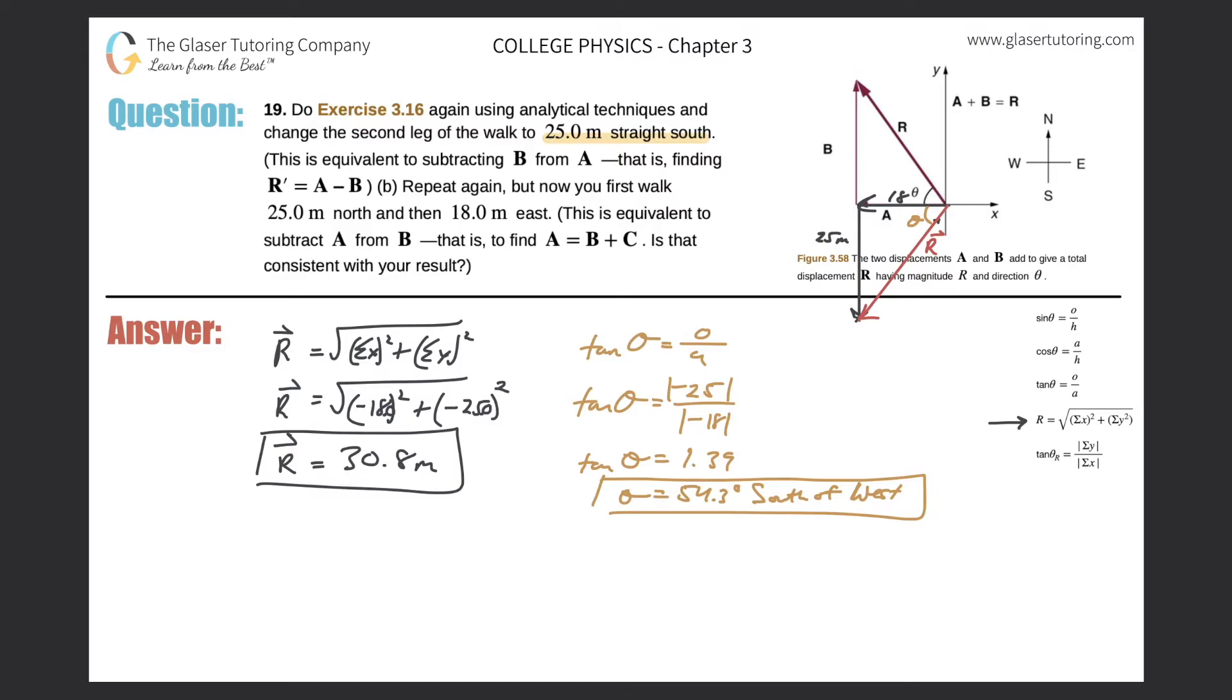So now that would conclude this first part. Now let's take a look at part B. So now it says repeat again but now you first walk 25 meters north and then 18 meters east.